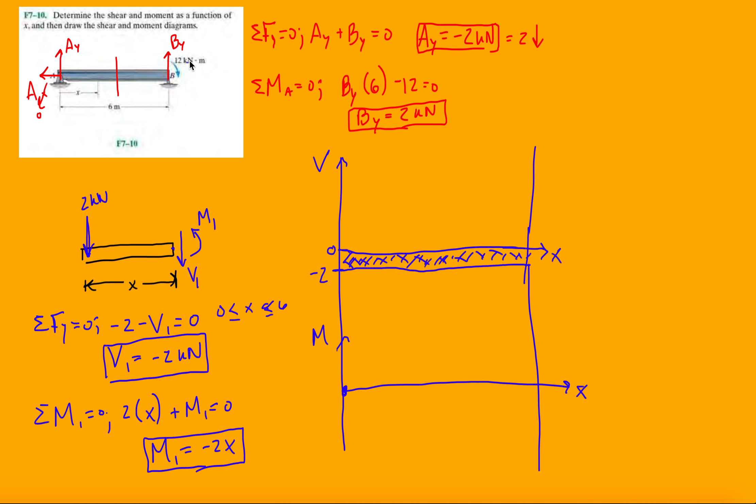But, because of that 12 kilonewton moment, we're going to get back a negative 12. So, this is clockwise, so it's negative. So, we know it's going to be negative. Or, just evaluate this at X equals 6, and we have a negative 12 over here. And, it's linear, so we know it's just going to go straight down like this.